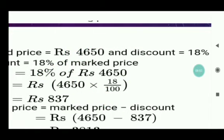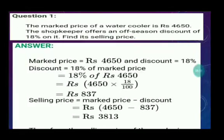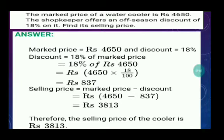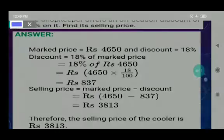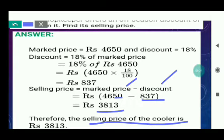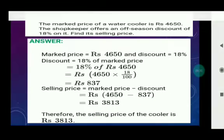The discount is Rs. 837. To find the selling price, we apply the formula: Selling Price = Mark Price minus Discount = 4,650 minus 837 = Rs. 3,813. Therefore, the selling price of the cooler is Rs. 3,830.